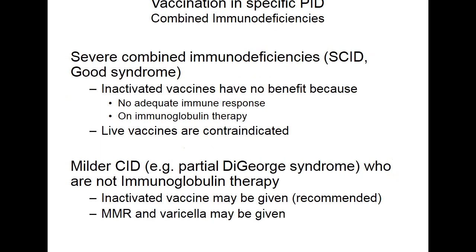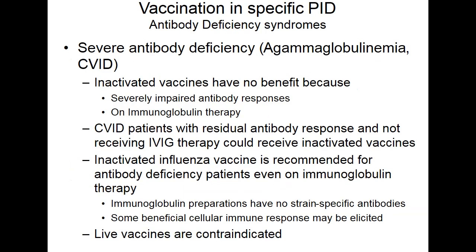In severe combined immunodeficiency, inactivated vaccines have no beneficial effect because there is no adequate immune response, and patients are most often also on immunoglobulin treatment. Live vaccines are contraindicated. In mild combined immunodeficiency — such as partial DiGeorge syndrome not on immunoglobulin therapy — inactivated vaccines may be given, and MMR and varicella may also be given. In X-linked agammaglobulinemia, patients have no B cells and cannot make antibodies, and they will be on immunoglobulin therapy.